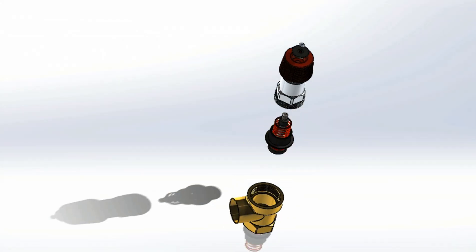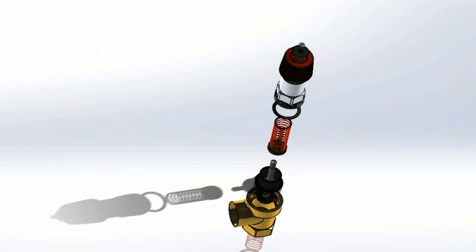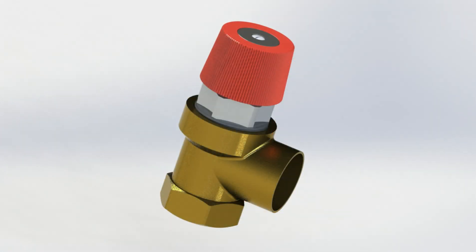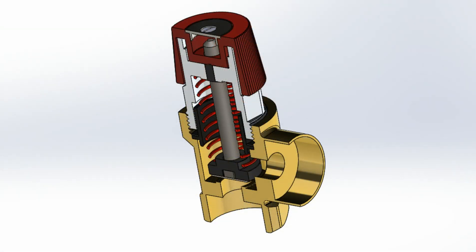The PRV valve starts and stops water flow into the molten salt heat exchanger. This controls the amount of steam produced going to the steam turbine.